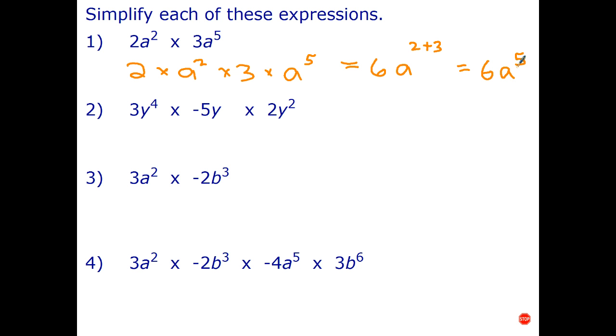I'll do this one the long way and then I'll let you have a go at the next two. So three y to the fourth means three times y to the fourth times negative five times y times two times y squared. So once again I can multiply in any order. So I can go three times negative five is negative fifteen times two is negative thirty. And since I'm running out of space I'm going to have to do the next step in my head.